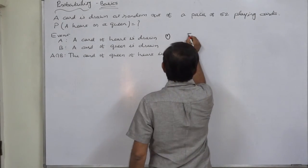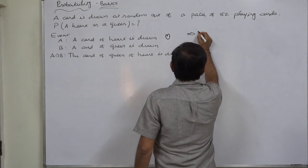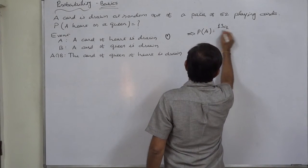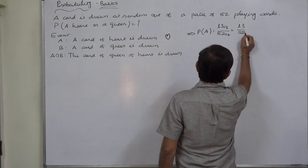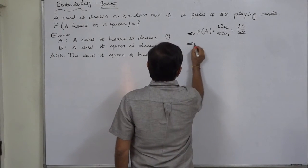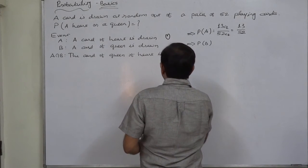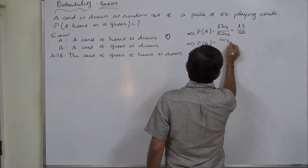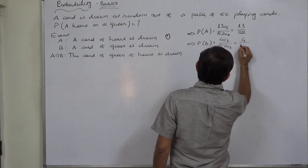Now what are the probabilities? There are 13 cards of heart. So P of A is 13C1 divided by 52C1, that is 13 by 52. Similarly, P of B, there are four cards of queen. So the probability is 4C1 by 52C1, that is 4 by 52.